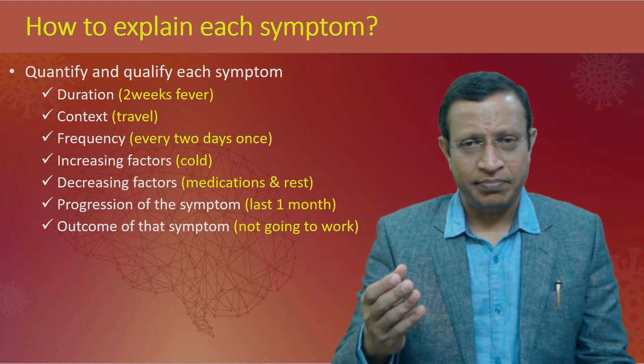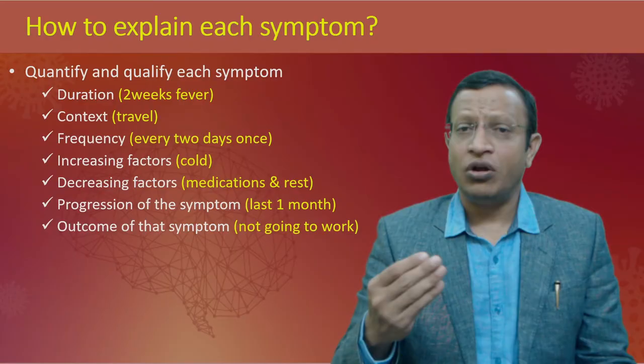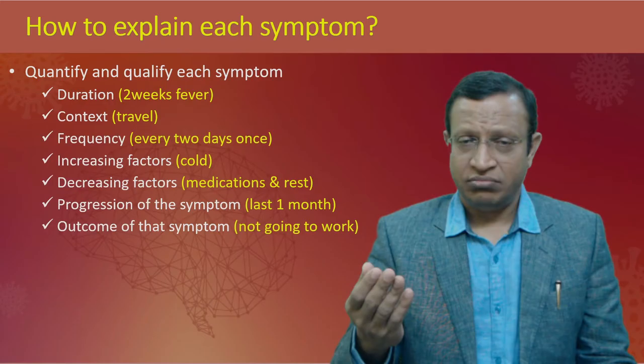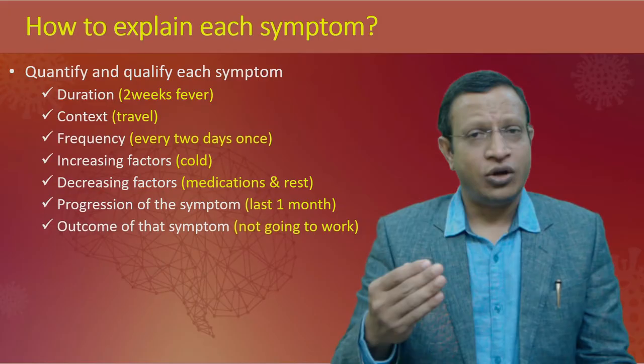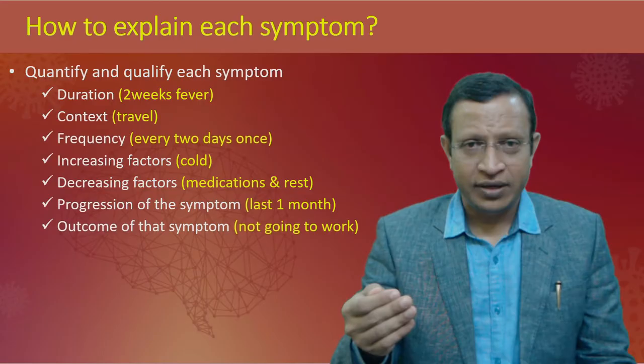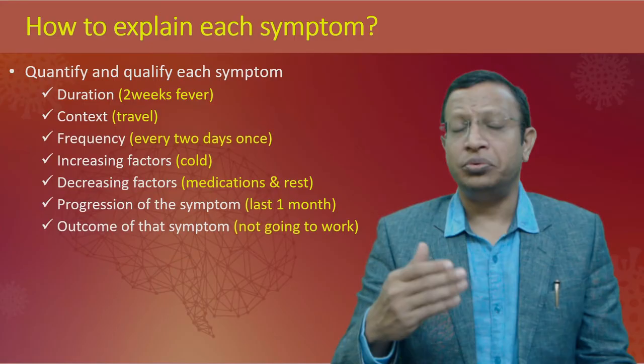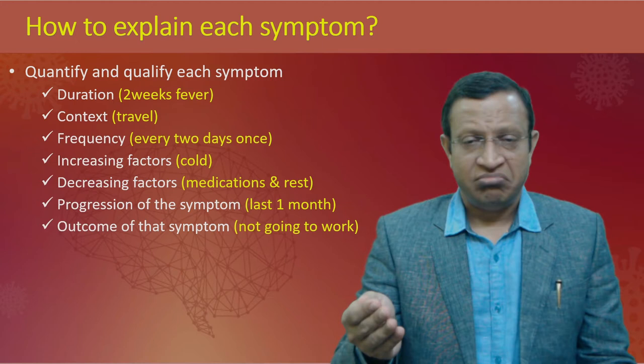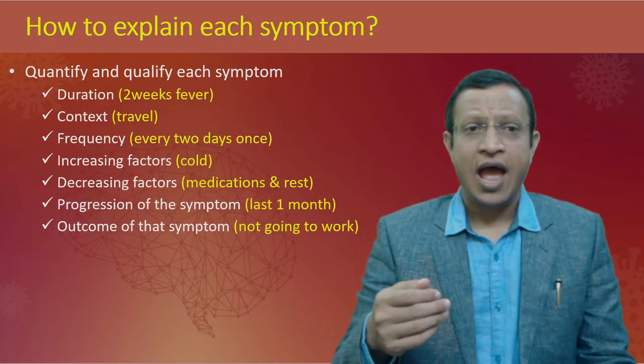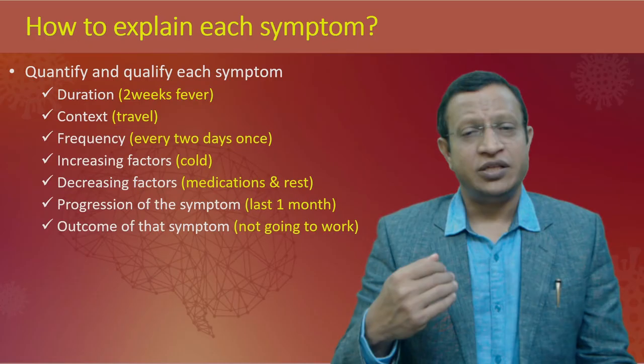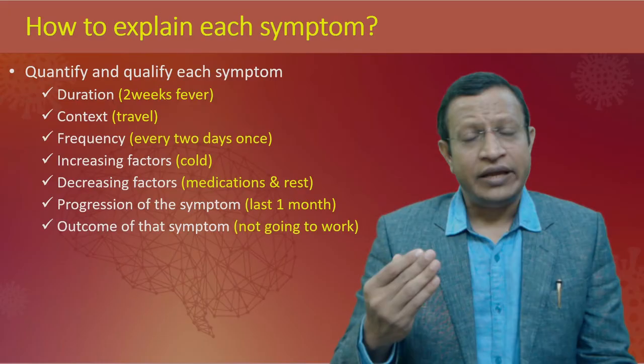For example, to take a history of fever: the person has had fever for two weeks; it started when he was traveling; it began mild and increased; it is very high with chills and rigors every two days; it decreases with medication; in the past one month it has become very severe; and because of the symptom, he is unable to go to work. This is how we explain each symptom.